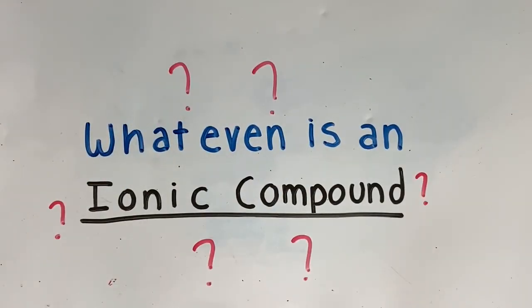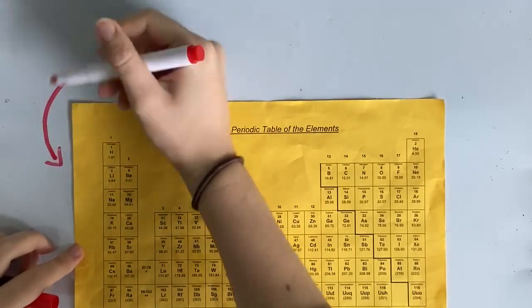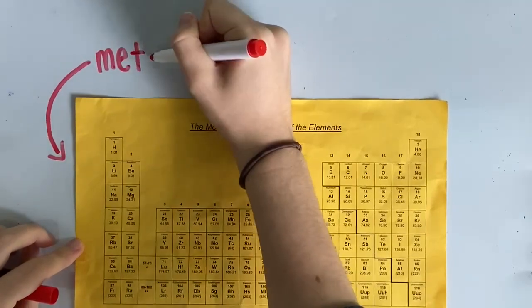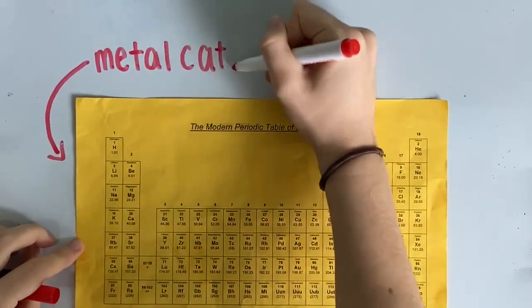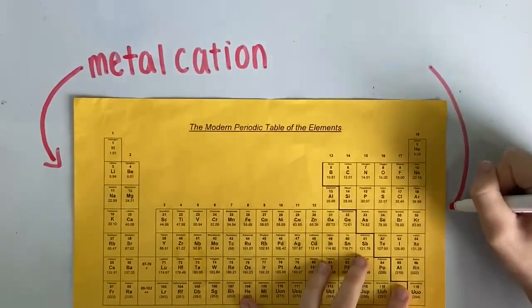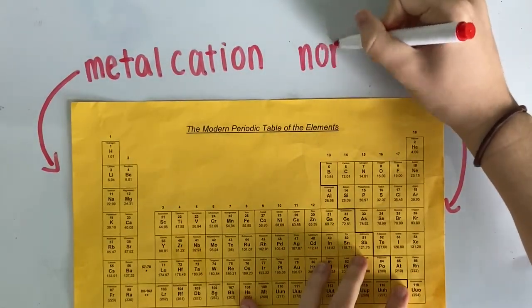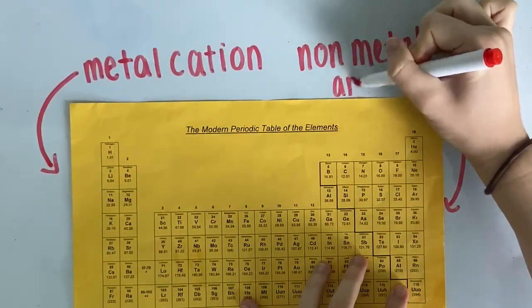What even is an ionic compound? An ionic compound is a bond between a metal cation, which is found on the left side of the periodic table up until the staircase, and a non-metal anion which is found on the right side of the staircase. This forms an ionic bond.